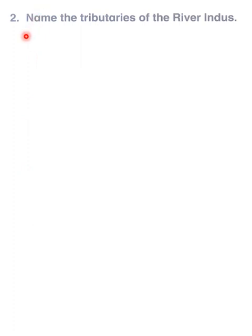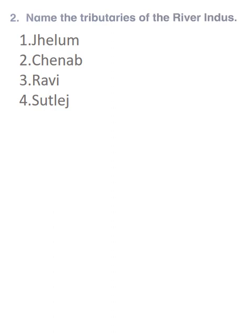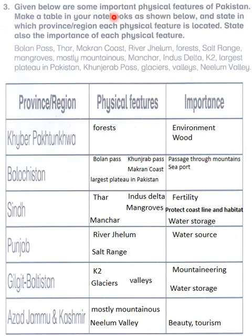Question number two: name the tributaries of River Indus. A tributary is a stream or a smaller river which comes and joins the bigger river. The River Indus is a very big main river that crosses nearly all of Pakistan. Its main tributaries are River Jhelum, Chenab, Ravi, and Sutlej. There are smaller tributaries also, but these are the main ones.